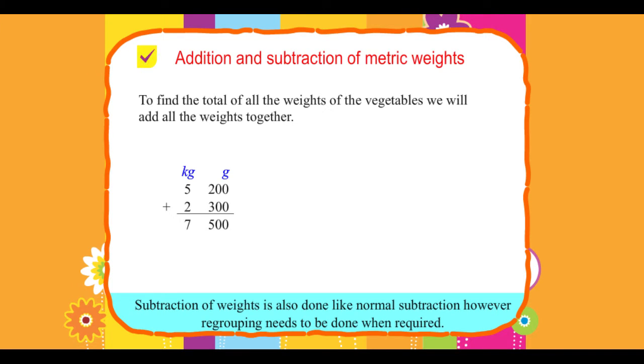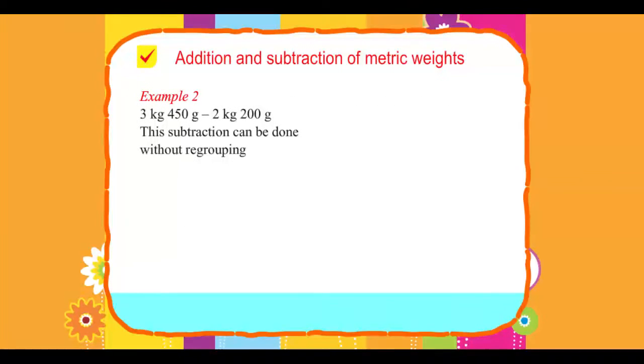Subtraction of weights is also done like normal subtraction. However, regrouping needs to be done when required. Example 2: 3 kg 450 g minus 2 kg 200 g. This subtraction can be done without regrouping.